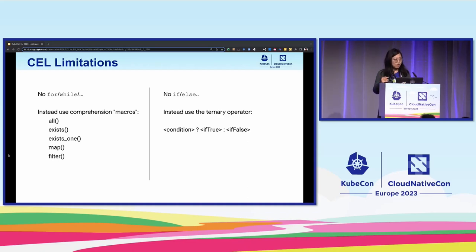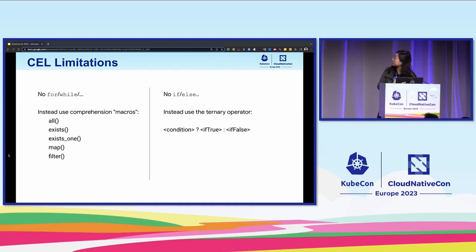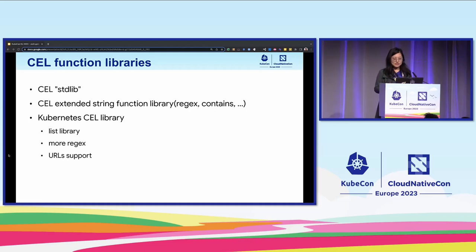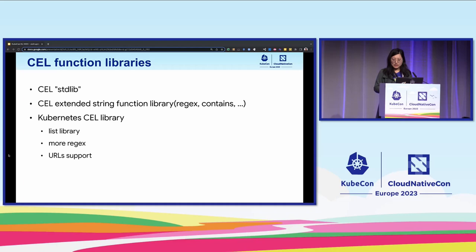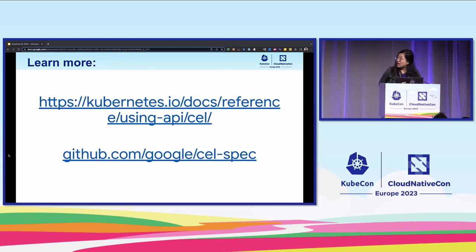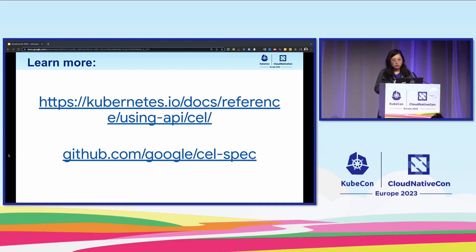Here are two major limitations to be aware of for CEL. First, CEL doesn't have native support for for and while looping — you have to use the comprehension form instead. CEL also doesn't support if-else conditionals; you have to use the ternary operator instead. As for utility libraries, CEL comes with a standard library and an extended library. We also built an even more extended library available in Kubernetes, including more list processing, more regular expressions, and first-class support for URLs.